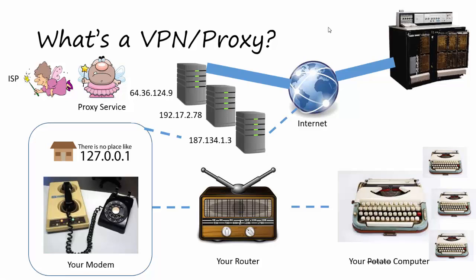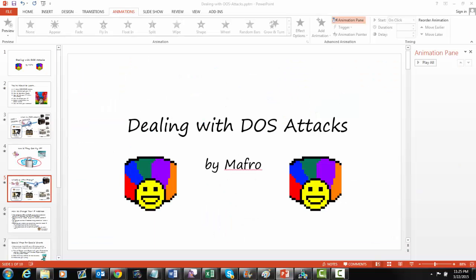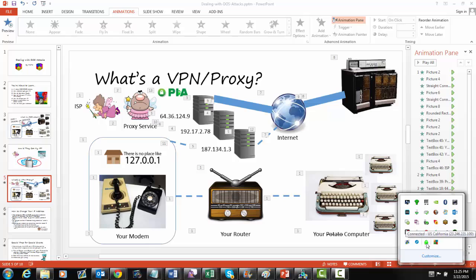I'll show you what this looks like using my own proxy service. It's a service called Private Internet Access — I've got the logo here, PIA. I spend $3.33 a month to have a good, fast VPN proxy service available to me. In my lower right-hand corner, I'm connected to my proxy and I appear to be coming from California. It even shows the IP address — 23.246.221.109 — that I'm showing to the rest of the world.